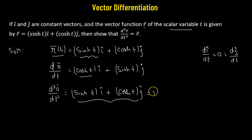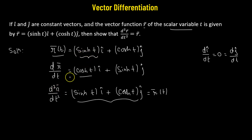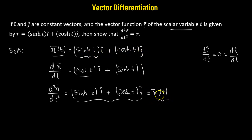We can see that this result — sinh(t) i-cap plus cosh(t) j-cap — is exactly our original vector function r. So we can replace this with r, which proves that the second derivative of r equals r itself. Whenever the vector function r is given by sinh(t) i-cap plus cosh(t) j-cap, taking its second derivative gives back r. Hence proved.